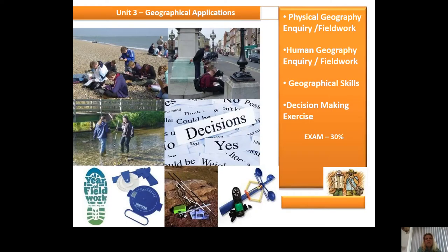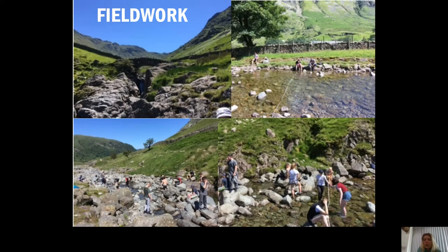The third exam paper is Geographical Applications. This is worth 30% of your GCSE and is an hour and 15 minutes exam at the end of Year 11. This includes us travelling out into the Lake District National Park to carry out fieldwork, where we'll look at the impact of tourism and how a river's characteristics change as it travels downstream, and the challenges that this can bring.